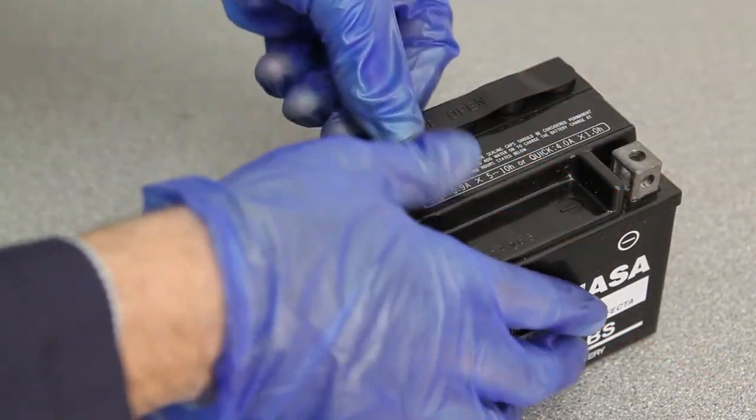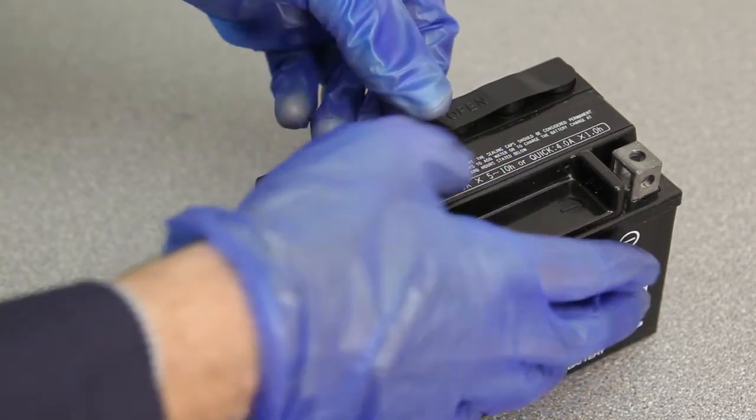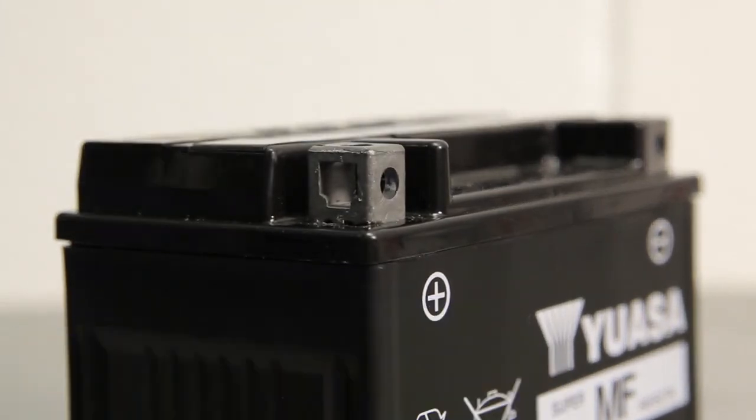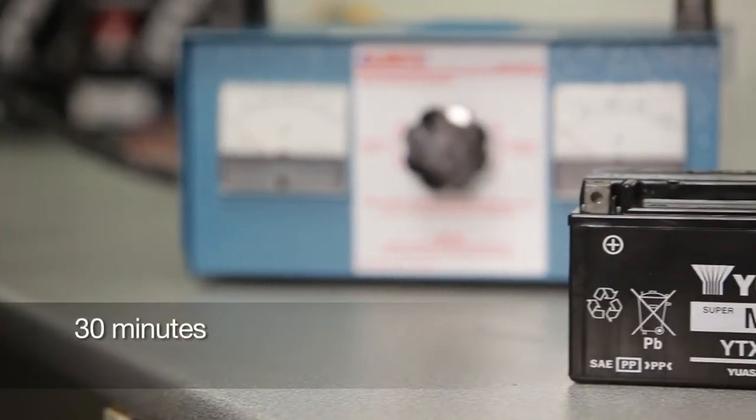Once completed, push the cap strip down using firm pressure from both hands until it's fully flush with the top of the battery. Let the battery stand for at least 30 minutes.